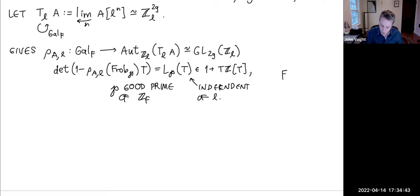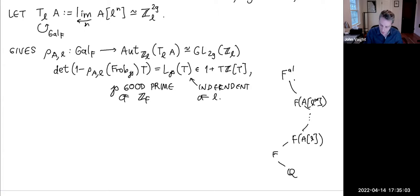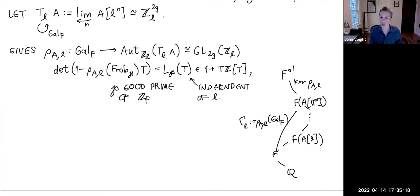Here's a field diagram. You have the algebraic closure of F, and inside it are things like the ℓ-torsion of A, all the way up to the field where you join all the ℓ^∞ torsion. The Galois group of that extension is the kernel of ρ_{A,ℓ}, and the image is what I'll call Γ_ℓ. I've put the slides in chat in case you want to follow along.